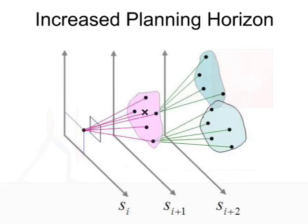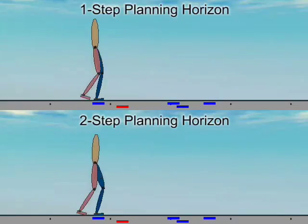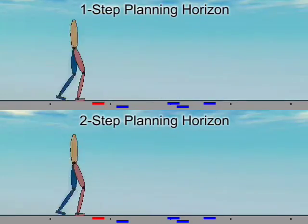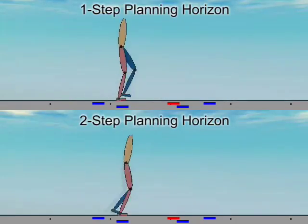We can increase the planning horizon by repeating the planning process starting from the predicted state. Here we demonstrate the effect that the planning horizon has on the resulting motion.